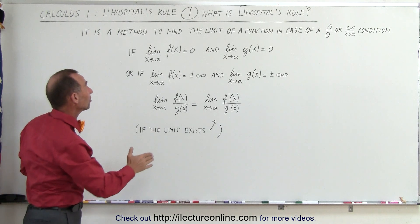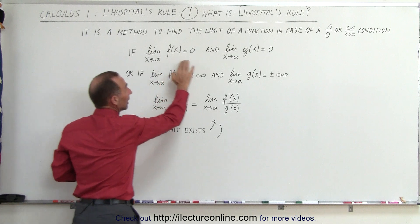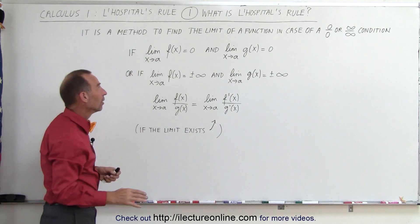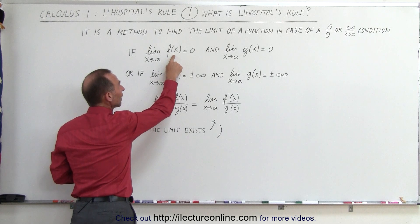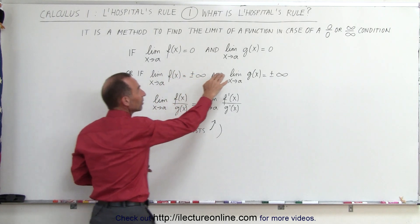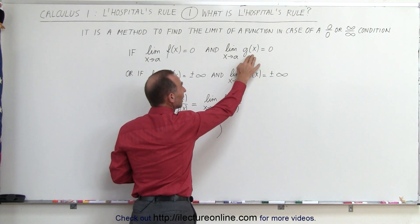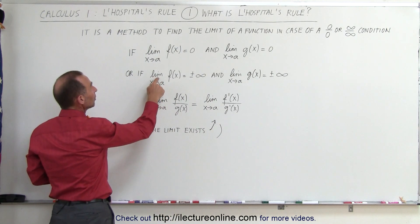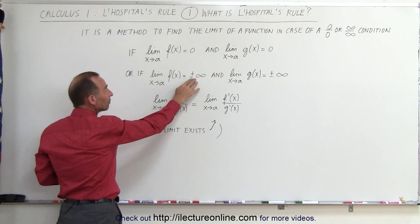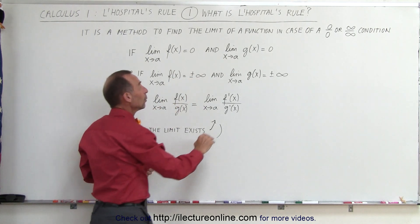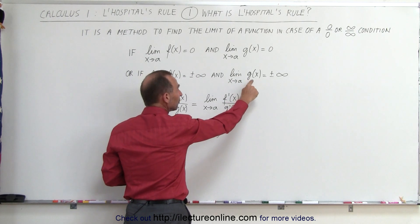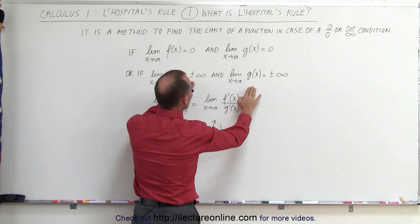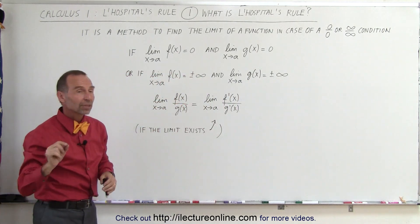Mathematically, the way we define that is: if we have two functions, f of x and g of x, and we're trying to find the limit of those two functions by plugging in a value for x — let's say the value is equal to a. So we evaluate the limit as x approaches a for f of x and we get 0, and at the same time when we plug in the same value for g of x, the limit as x approaches a also gives 0. Or if the condition is such that the limit as x approaches a of f of x gives either positive or negative infinity, and at the same time the limit as x approaches a of g of x also becomes either plus or minus infinity — so either both functions become 0 or both functions become plus or minus infinity when we let x approach a particular value.